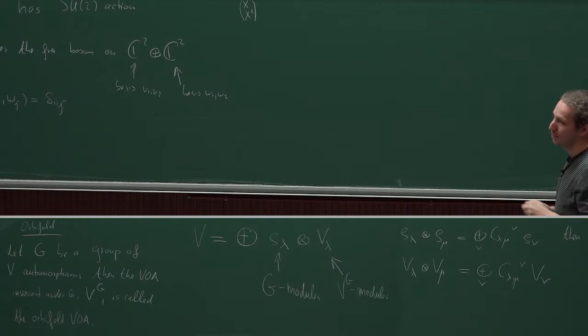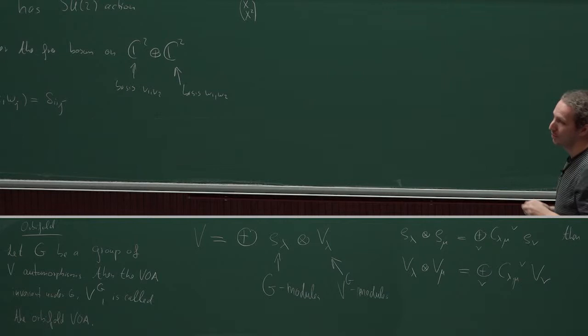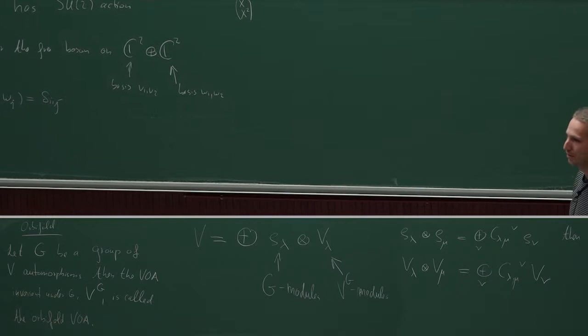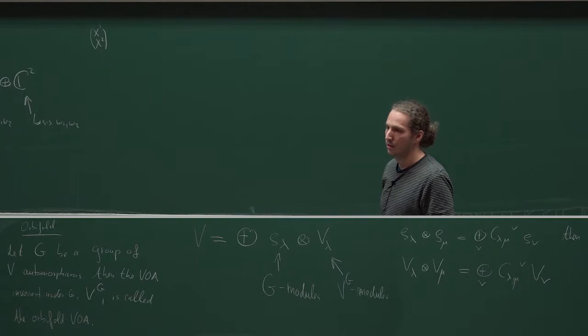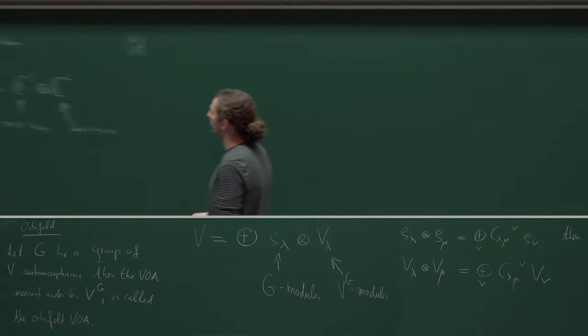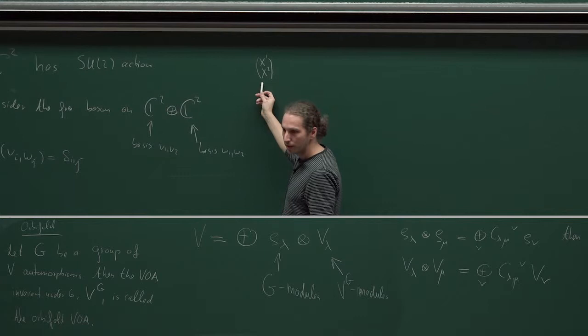This big Heisenberg VOA — you can take the SU(2) orbifold and it decomposes in such a way. There's not much to say about these modules explicitly. Maybe some people here know what the normal orbifold is from learning string theory. So what is the orbifold action right now? These vectors carry the standard representation of SU(2) — that's the action of SU(2) on it.